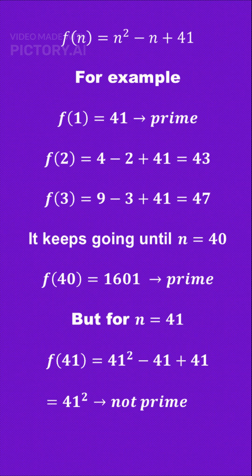However, at n = 41, the magic fades as the result is 41² - 41 + 41, which equals 41² and is not prime.